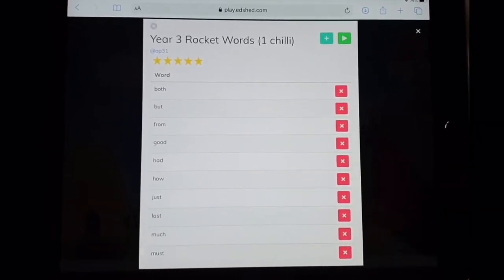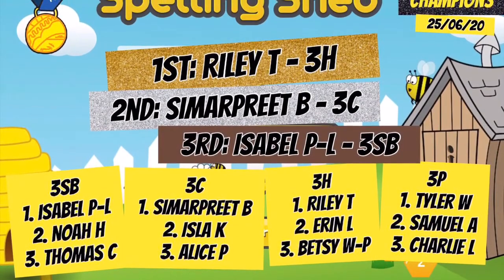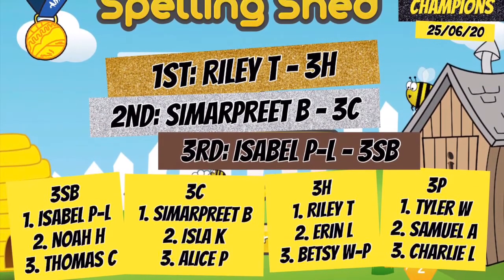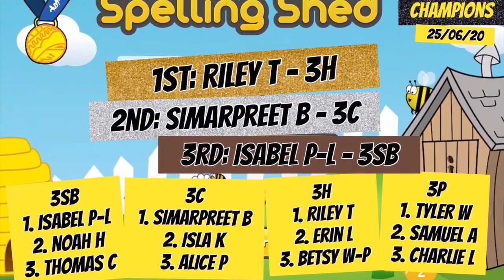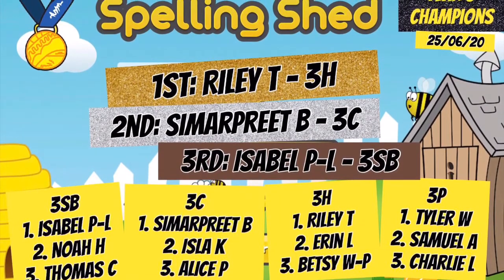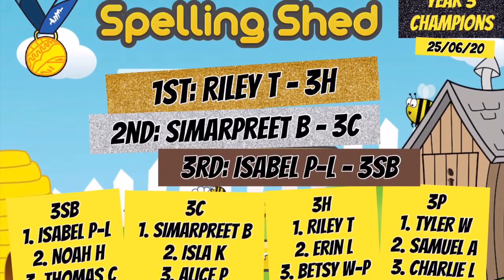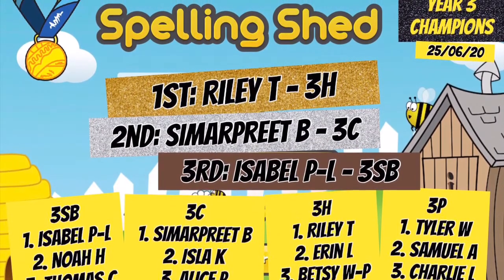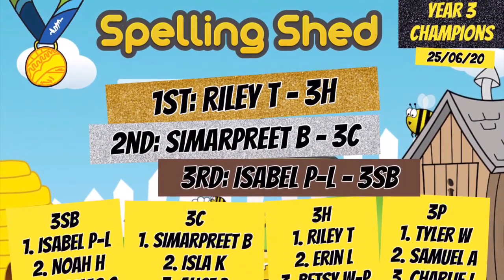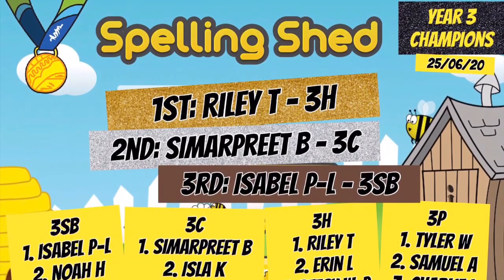Before we go, should we have a look at who's been doing a brilliant job on Spelling Shed this week? A big well done to Isabel, Piel, Noah, and Thomas in 3SB; Samapreet, Isla, and Alice in 3C; Riley T, Erin, and Betsy in 3H; and Tyler, Samuel, and Charlie in 3P for being in the top three in their class on Spelling Shed. Overall in Year 3, well done to Isabel Piel in 3SB for being third overall, Samapreet in Year 3C for finishing second, and a huge well done to Riley T in 3H for not only being first in Year 3 but also being top of the entire school. Well done everyone — we're very proud of you.